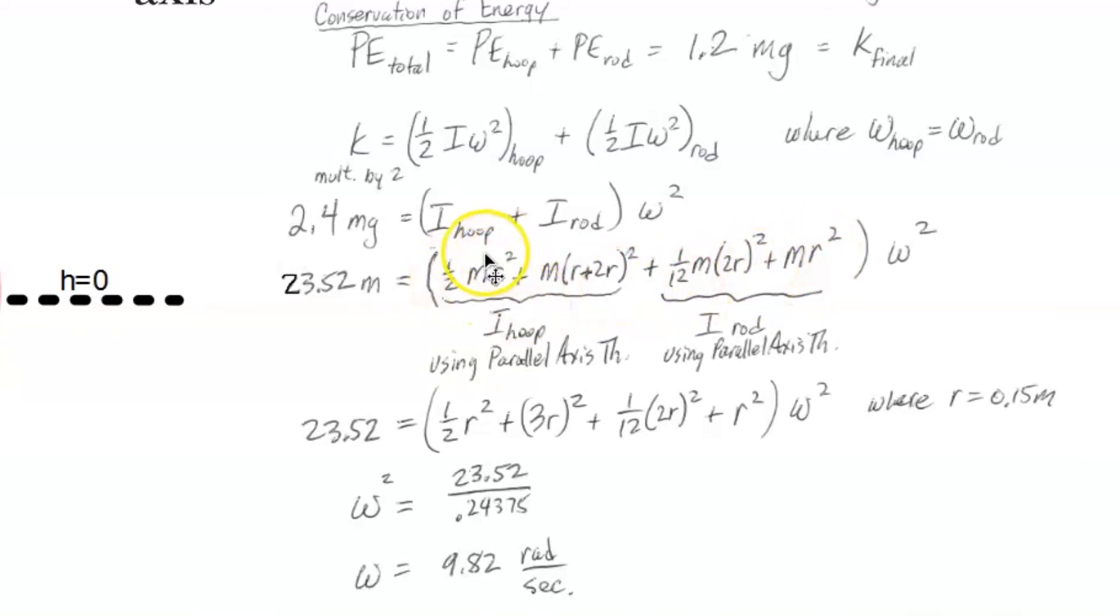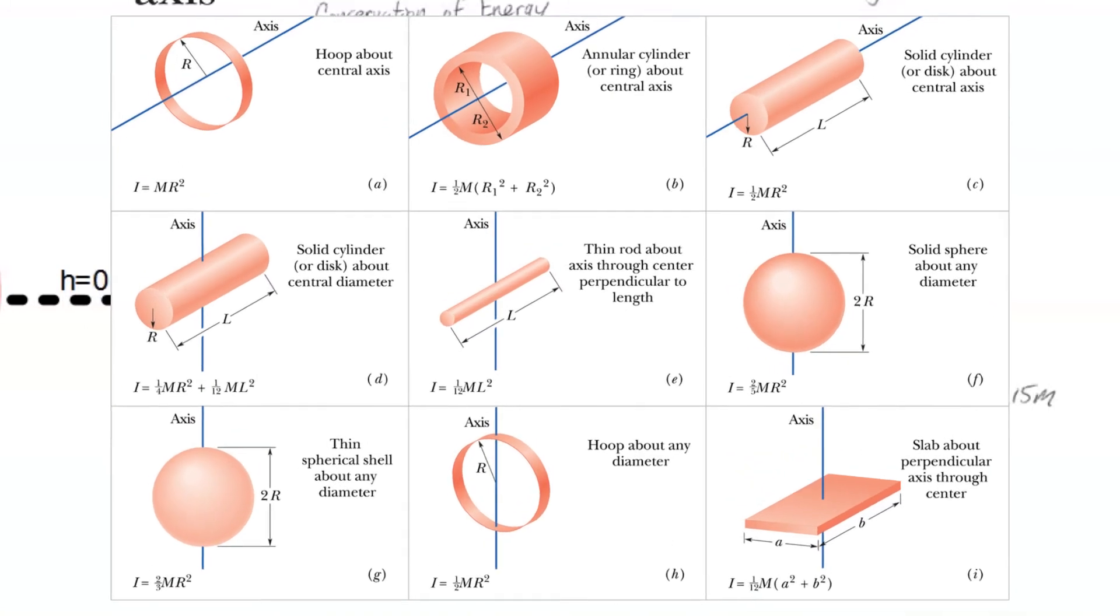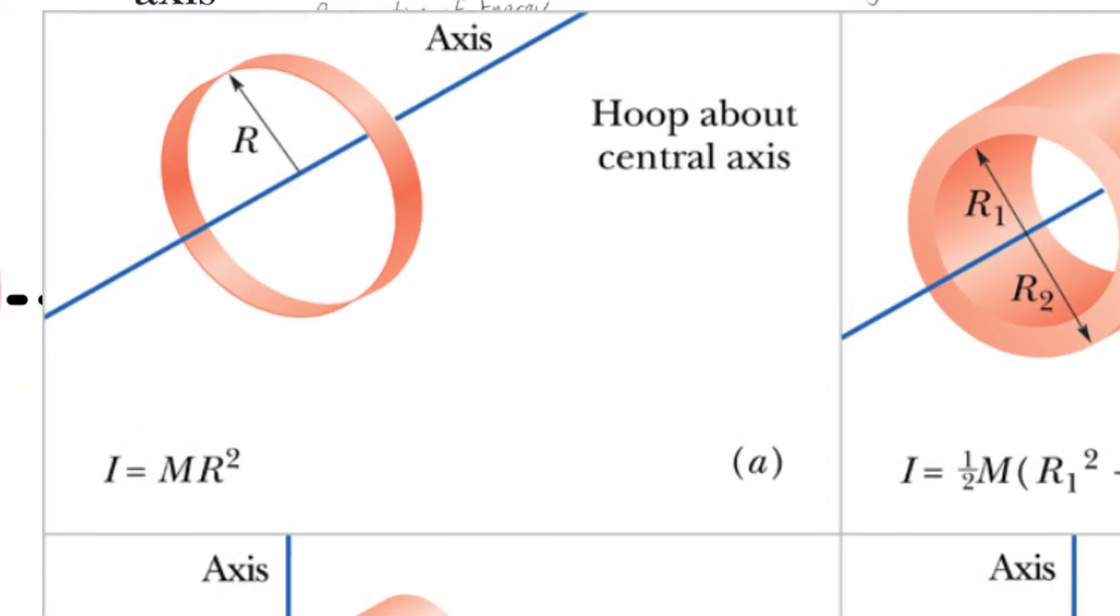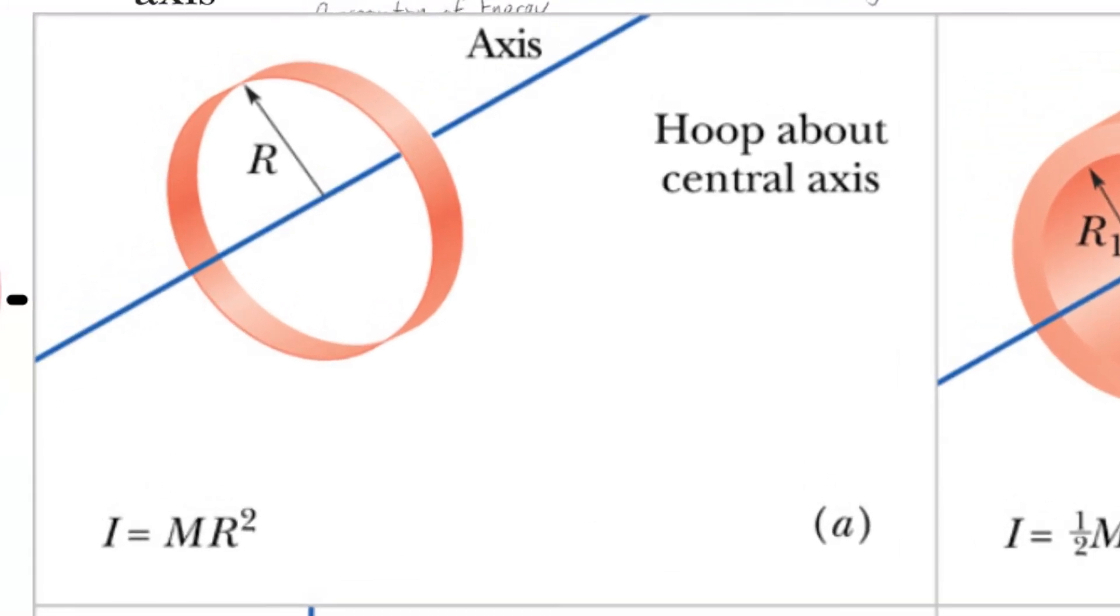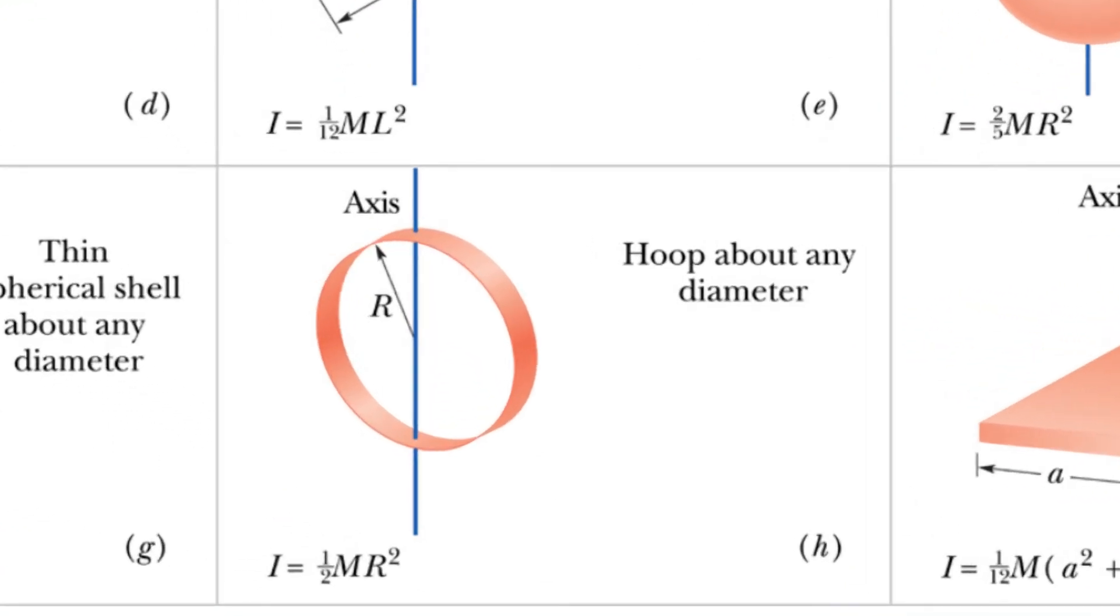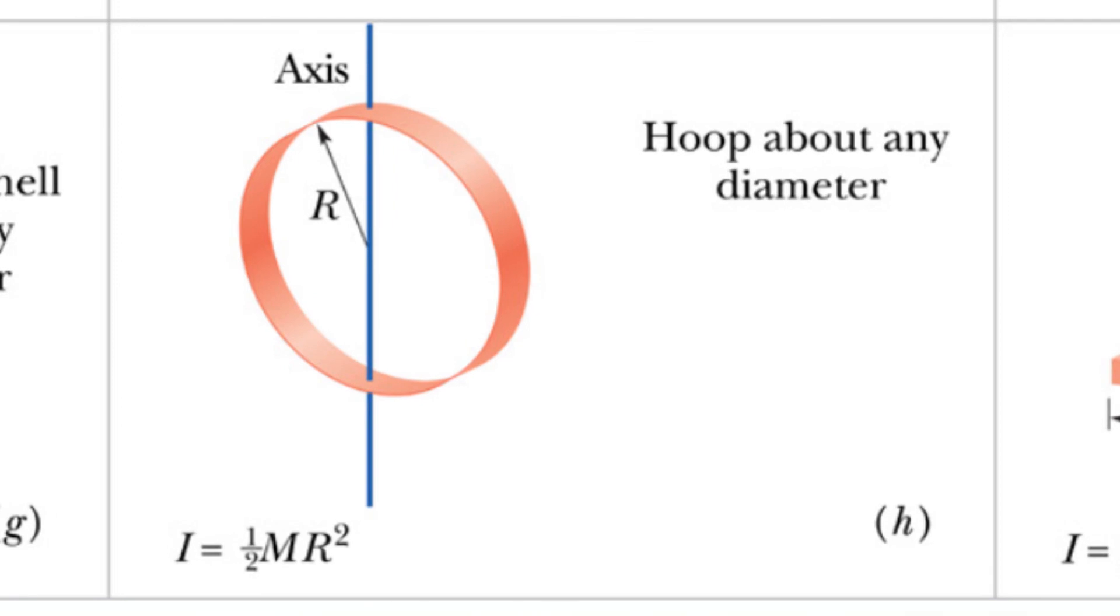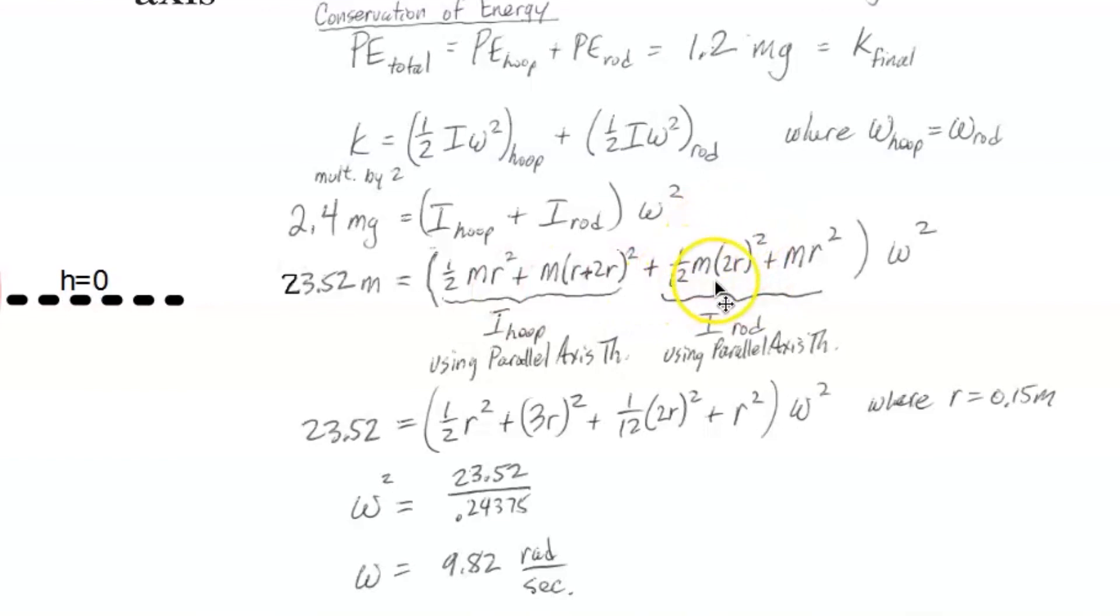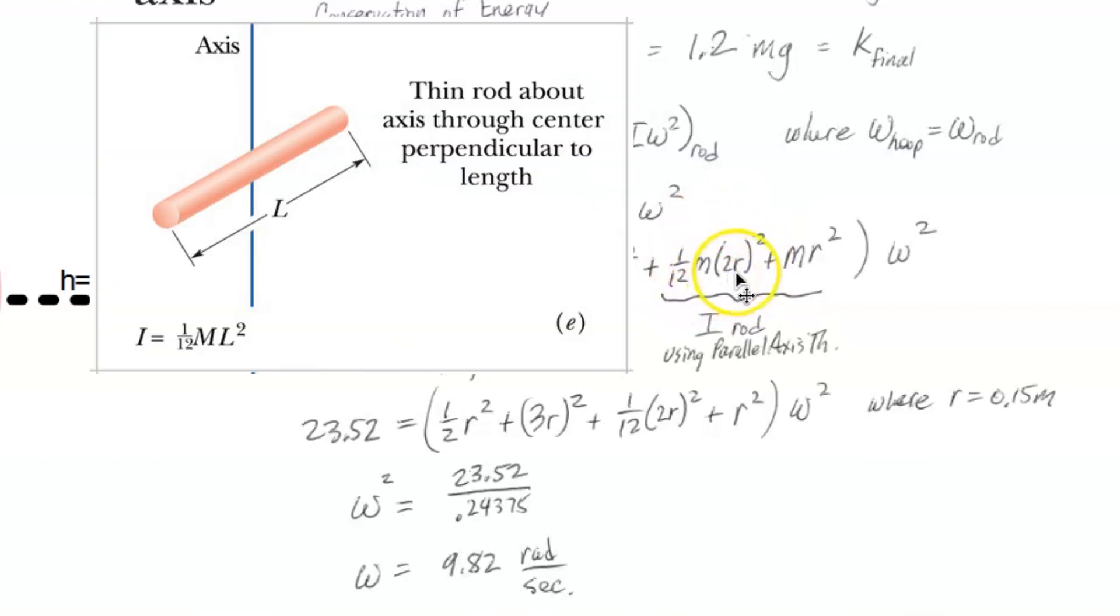The I_com values, for the hoop, you have to be careful. Because in table 10-2, you see there are two entries for a hoop. One of them is a hoop about a central axis, which this one is not. So that's what you see here, one-half mr squared for a hoop about any diameter. And then I_com for a rod is one-twelfth ml squared. And we see the length of the rod, l, is 2r.